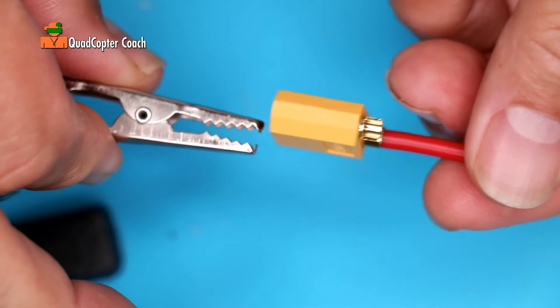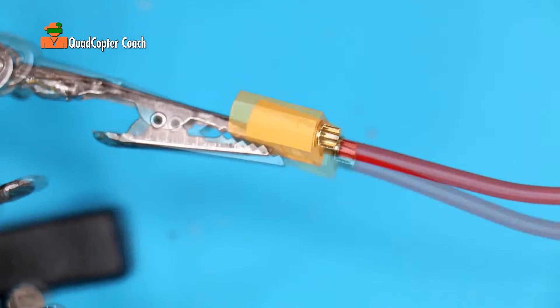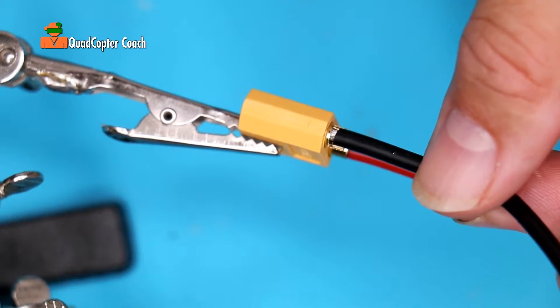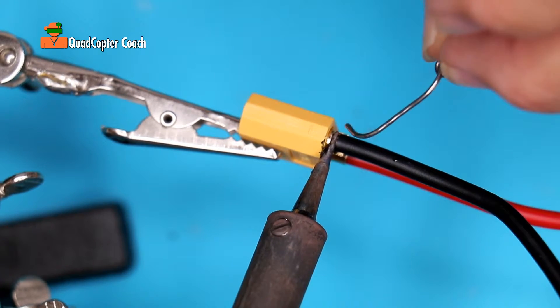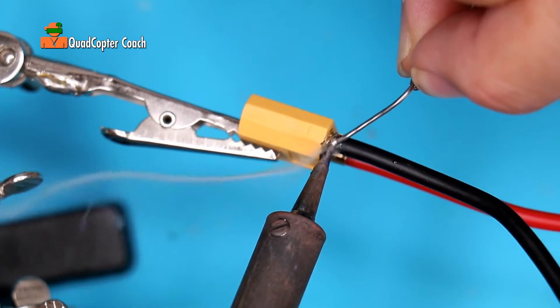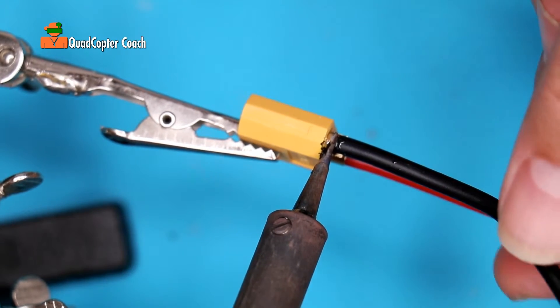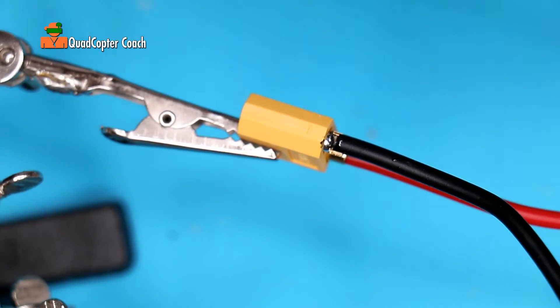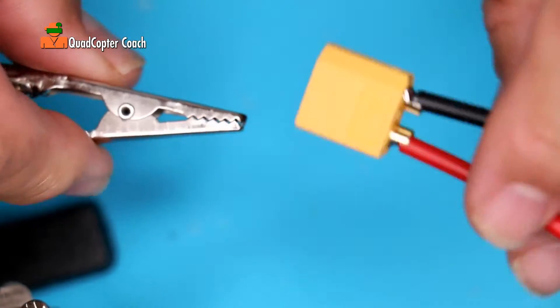Flip it over. Now we're going to do the ground. Take your black wire, and now put it in the hole with a little gap. Apply heat and solder. The solder should flow right into the hole. And just give it a moment. And that should be secure. Little tug, little tug. That's perfect.